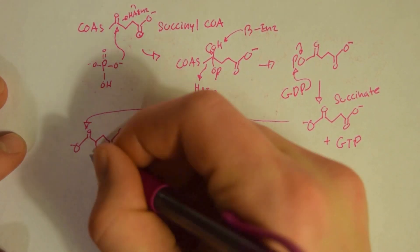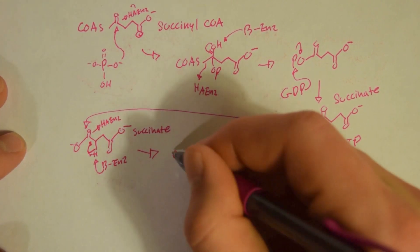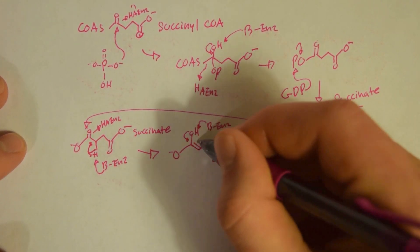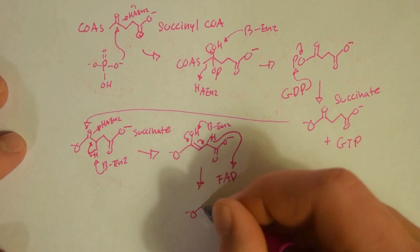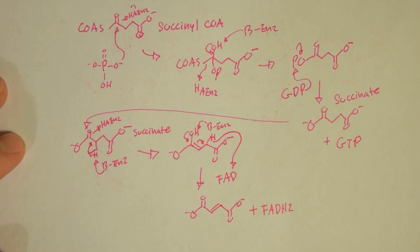The next enzyme is going to take succinate and an FAD, kick off a proton from the succinate, giving us fumarate and FADH2.